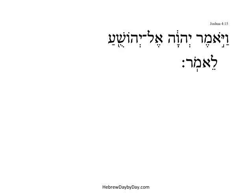Joshua 4:15 — Vayomer Hashem el Yehoshua Lemor. The subject is the Lord. And the Lord said to Joshua, saying. Now there are two forms of the verb Amar, to say.